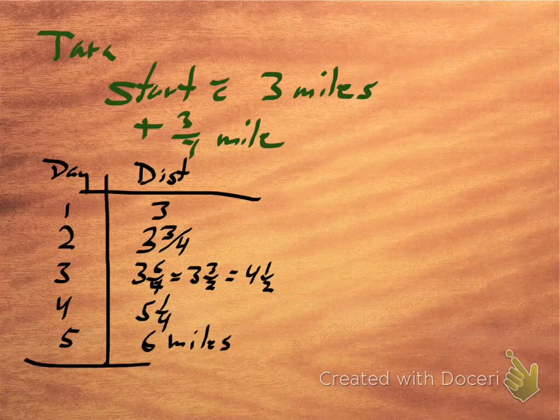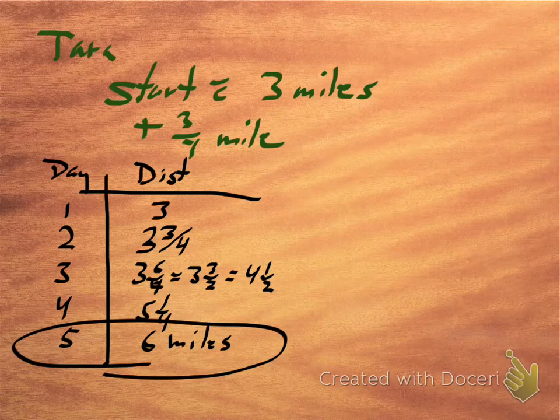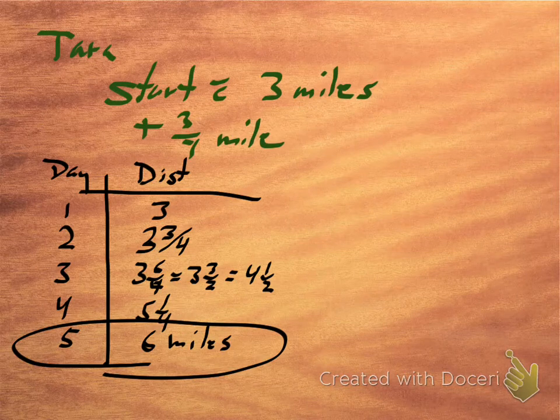So the question asked, at what point does Tara first go six miles? And so the answer, based on the chart, will be five days.